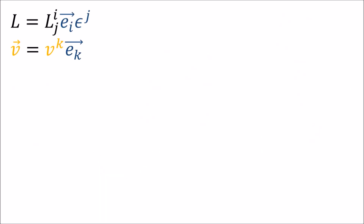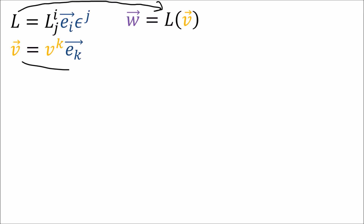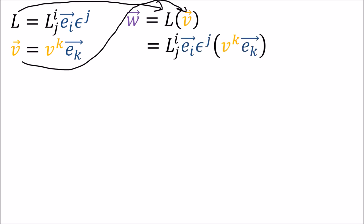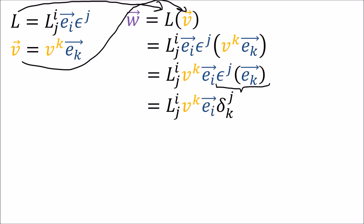Another big benefit is that when we have a linear map acting on a vector, we get the correct matrix-vector component multiplication formula for free. We replace the linear map and the vector with their linear combinations expanded in some basis, and by using linearity rules and the Kronecker delta index cancellation rule, we automatically get the correct components for the output vector.